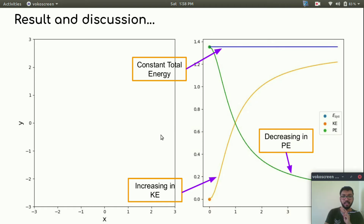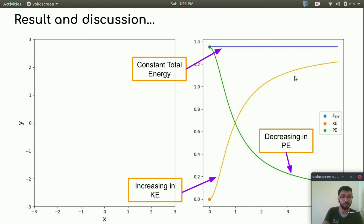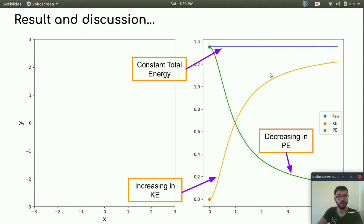We have noticed three things. First, our total energy remains constant throughout the simulation, which means our simulation is correct. Second, potential energy is decreasing — as expected, due to repulsive force the particles expand, causing potential energy to decrease. Third, kinetic energy is increasing and eventually reaches a saturation point. These are the three things we learned from this problem. Let's jump to the second problem.